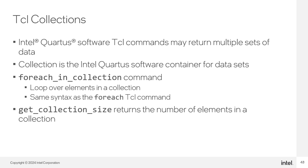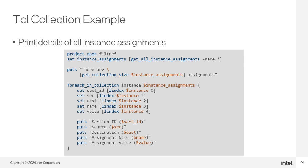Some Intel Quartus Prime Software Tickle commands, such as commands to get all assignments in your design, return multiple sets of data as collections. A collection is an Intel Quartus Prime Software-specific container. Use commands in the miscellaneous package to handle collections — iterate over elements with for_each_in_collection (same syntax as Tickle's for_each), and get_collection_size returns the number of elements. Here's an example that prints details of all instance assignments: get_all_instance_assignments returns a collection, get_collection_size prints how many elements are in it, and for_each_in_collection iterates over each assignment, printing the section ID, source name, destination name, assignment name, and assignment value.